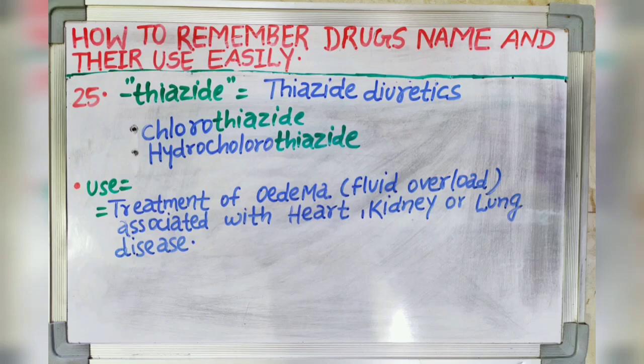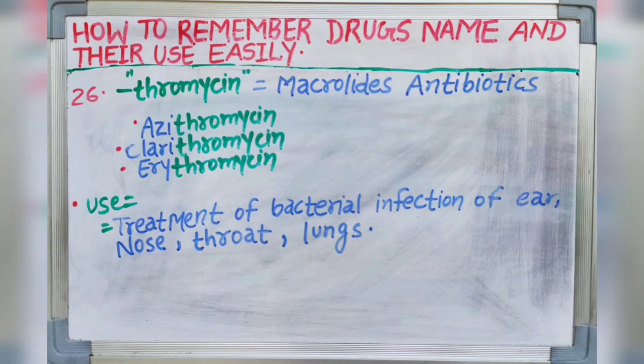Next suffix is -thromycin. Thromycin indicates macrolide antibiotics. Drugs like azithromycin, clarithromycin and erythromycin are used in treatment of bacterial infections of the ear, nose, throat and lungs. Azithromycin and erythromycin are broad spectrum antibiotics.